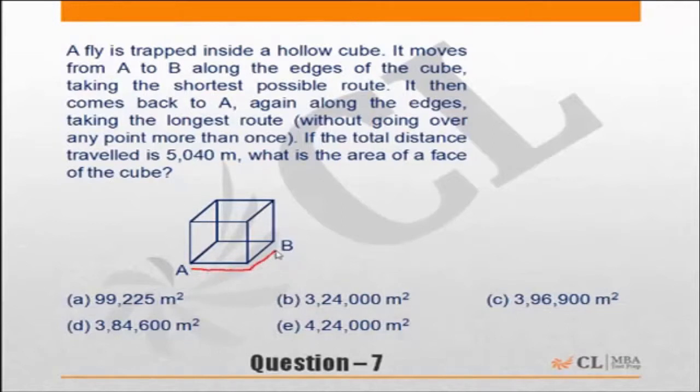It then comes back to A again along the edges, taking the longest route without going over any point more than once.